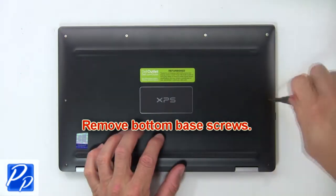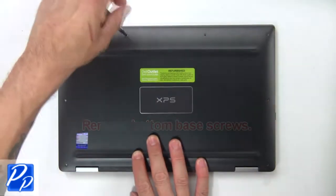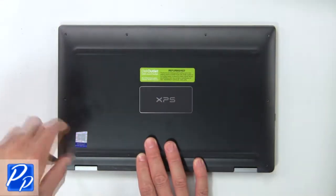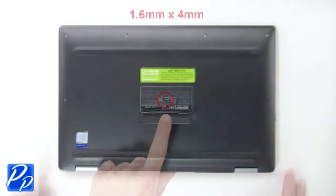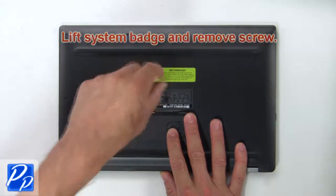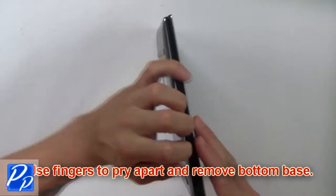First, remove bottom base screws. Now lift system badge and remove hidden screw. Then use fingers to pry apart and remove bottom base.